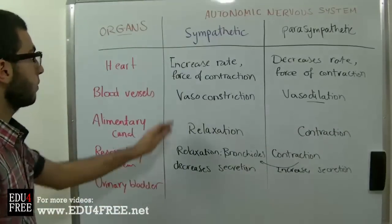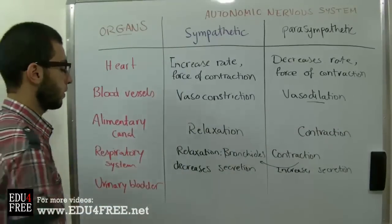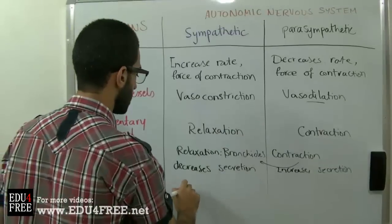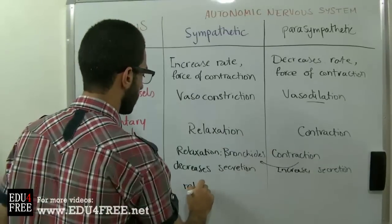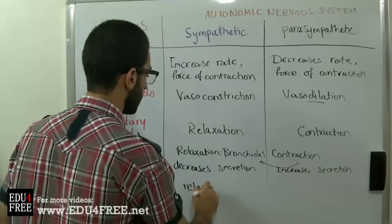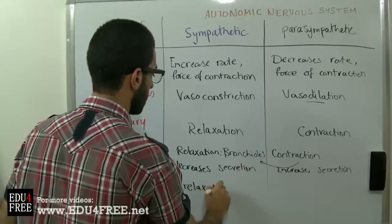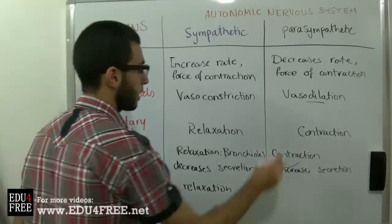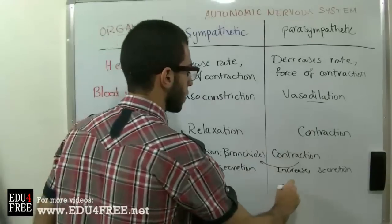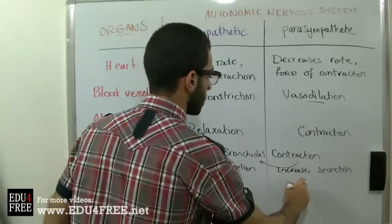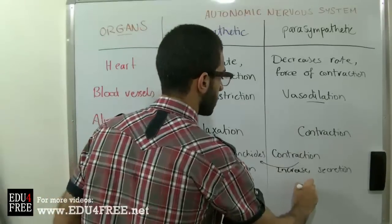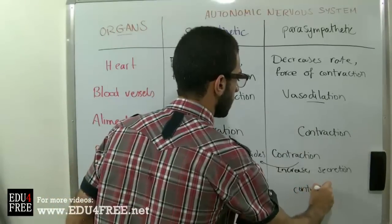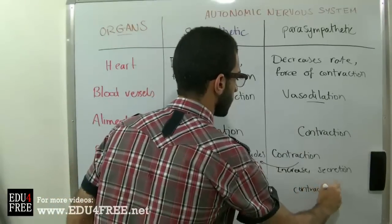Regarding the Urinary Bladder, the Sympathetic Nervous System causes relaxation of the walls of the Urinary Bladder, while the Parasympathetic Nervous System causes contraction of the walls of the Urinary Bladder.